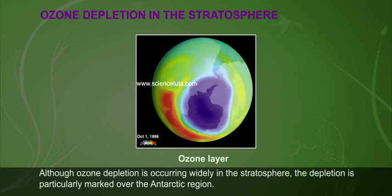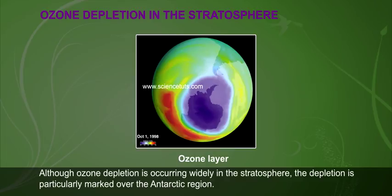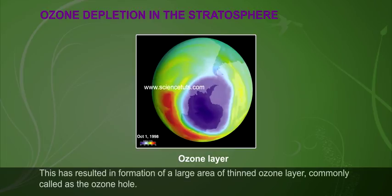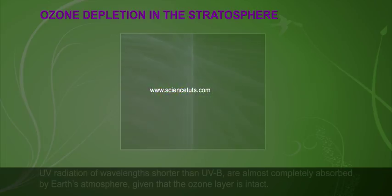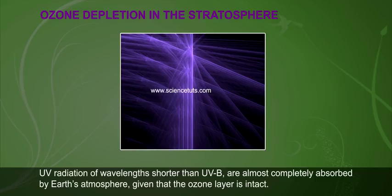Ozone depletion is occurring widely in the stratosphere, but the depletion is particularly marked over the Antarctic region. This has resulted in the formation of a large area of thin ozone layer, commonly called the ozone hole.